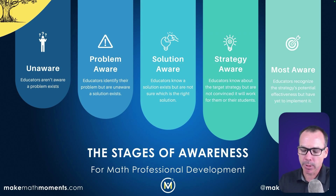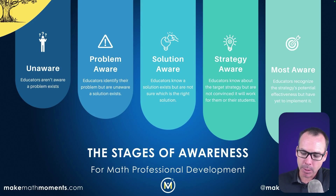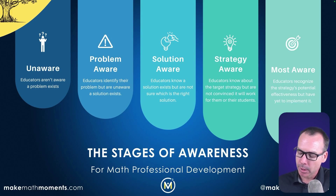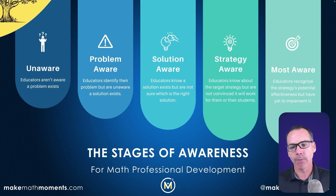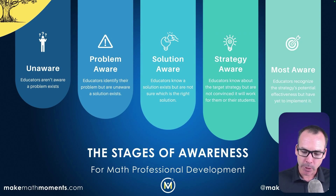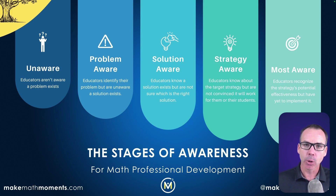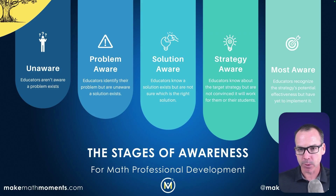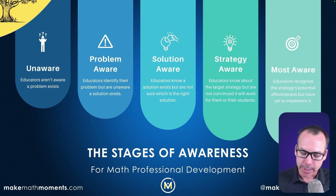If you only have system-wide PD days and see teachers once or twice a year, when you're planning that day, don't assume they're in the solution aware stage. Help them identify the problem, make the connection, convince the elephant, and they'll be more likely to adopt the strategy — as long as you've also built in accountability or follow-up for when they're ready to implement after the most aware stage. Five stages of awareness for mathematics professional development — take this, put it into your work plans, make it part of your math improvement plans. Use it to reach your objectives and key results, and identify where teachers are so you can help them better.